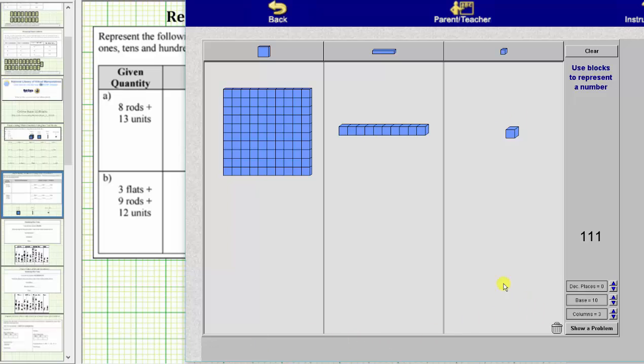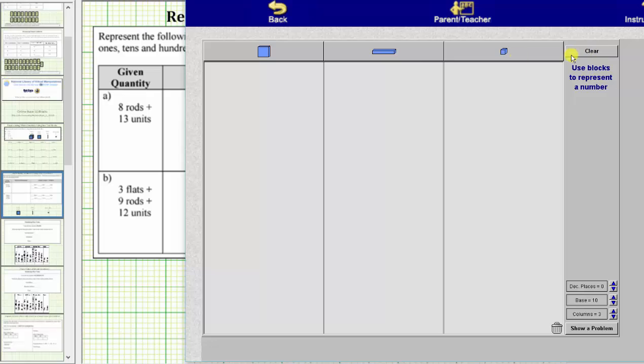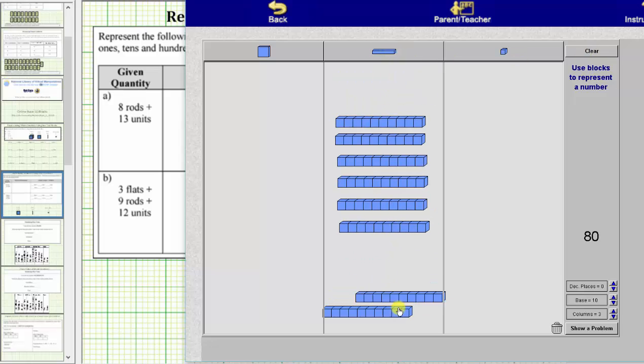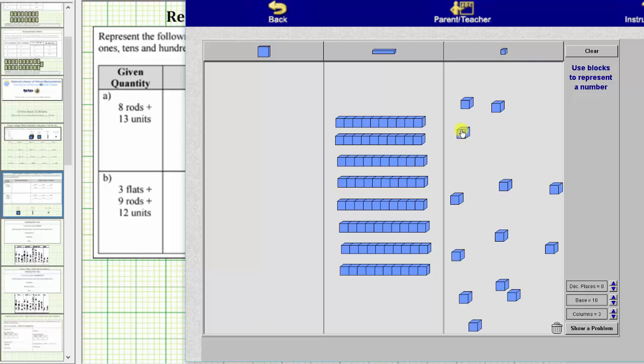For the first example, we're given eight rods plus 13 units. Our goal is to represent this quantity using the least number of base 10 blocks. And because 10 units equals one rod, we can perform an exchange.